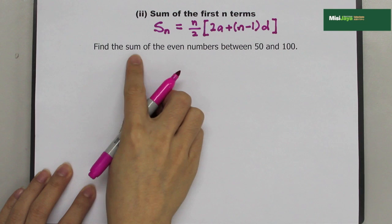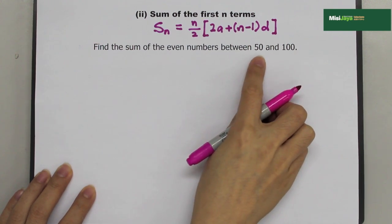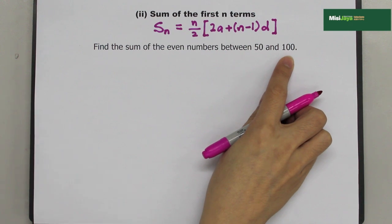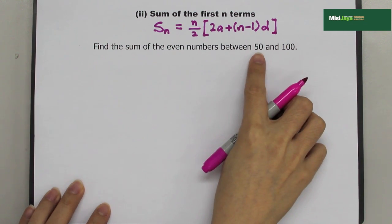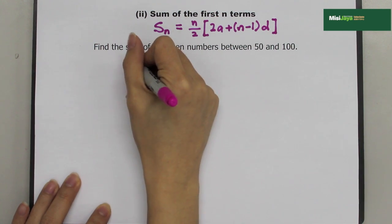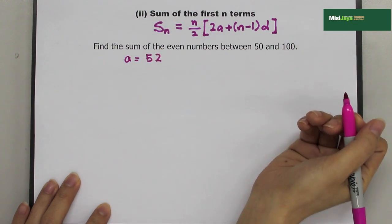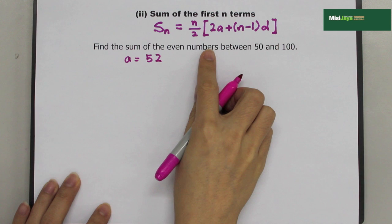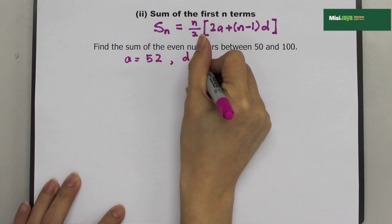Example: find the sum of the even numbers between 50 and 100. From this sequence, we know that the first even number after 50 is 52. Therefore, A is 52. Because all even numbers can be divided by 2, the common difference is equal to 2.